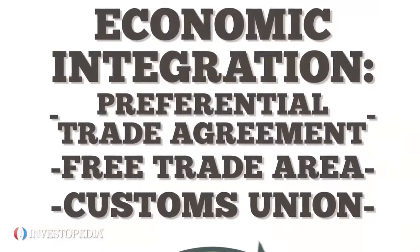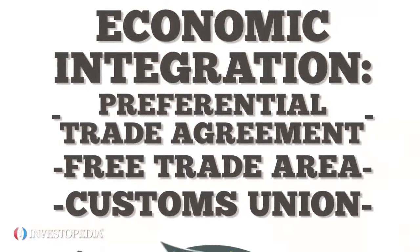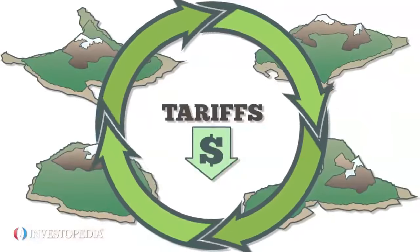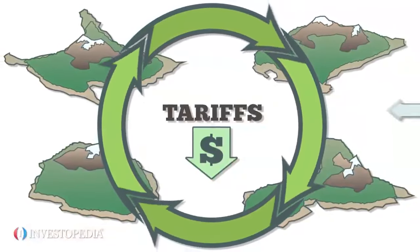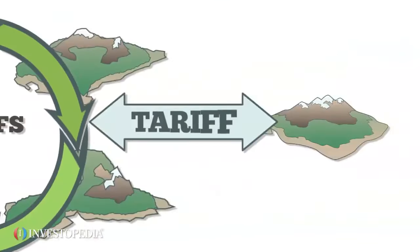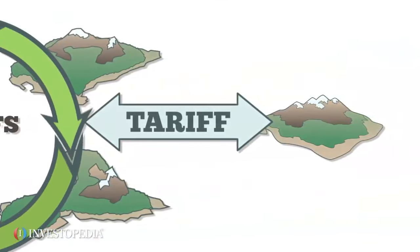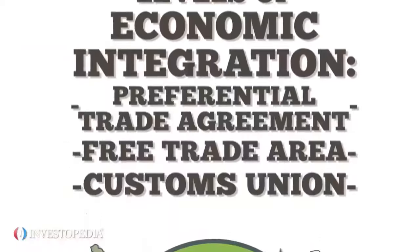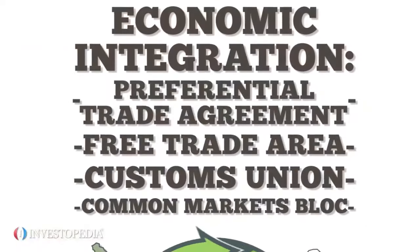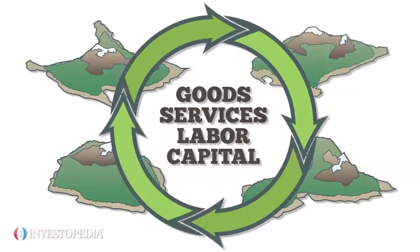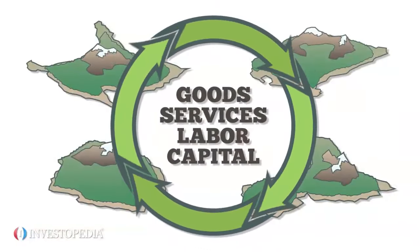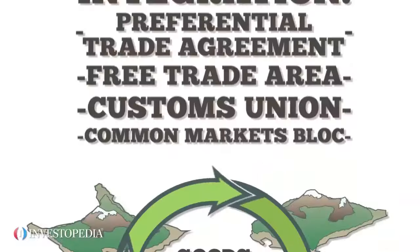In a customs union, member countries reduce or remove tariffs among themselves and impose a common tariff against non-member countries. Countries involved in a common markets block freely exchange all goods, services, labor, and capital.